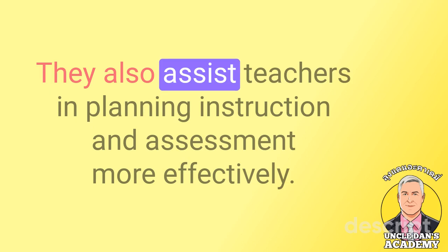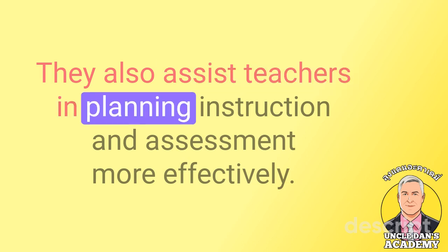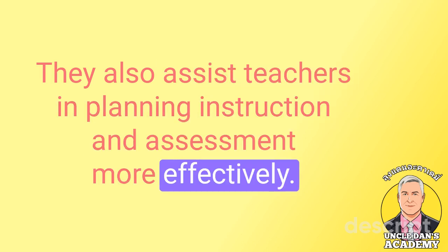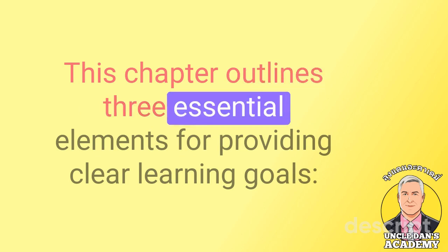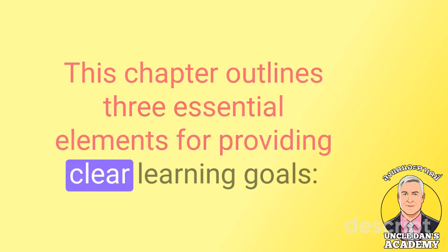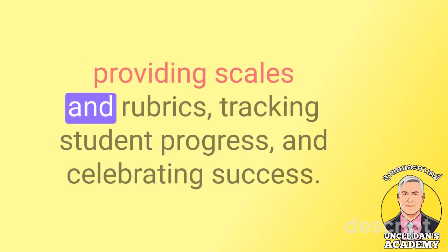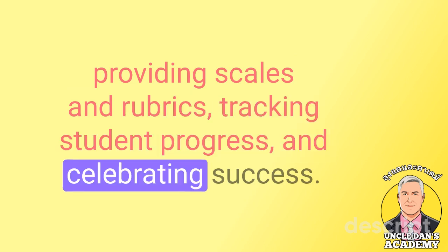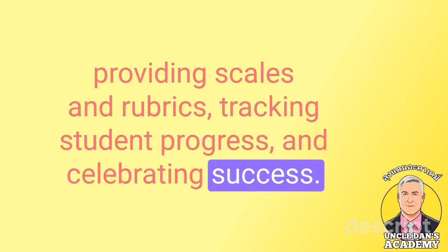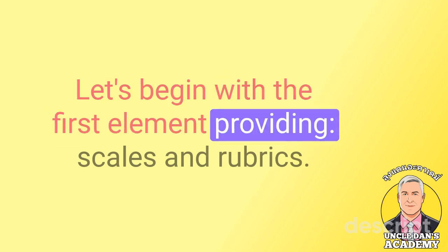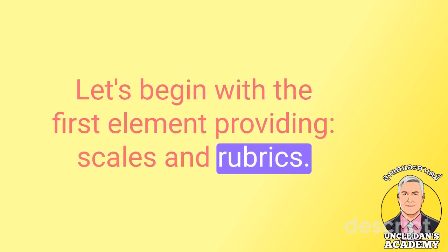Clear learning goals also assist teachers in planning instruction and assessment more effectively. This chapter outlines three essential elements for providing clear learning goals: providing scales and rubrics, tracking student progress, and celebrating success. Let's begin with the first element, providing scales and rubrics.